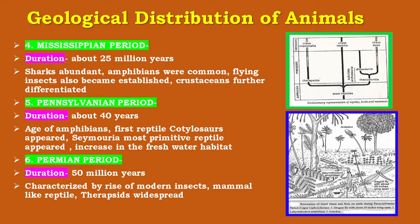The Permian period lasted about 50 million years. It is characterized by the rise of modern insects, mammal-like reptiles and therapsids, which were widespread. This period was named by Murchison in 1841. Climate varied from desert to warm and humid conditions. Due to widespread climatic and geographic change at the end of the Permian, organisms were forced to adapt themselves to new changing environments.